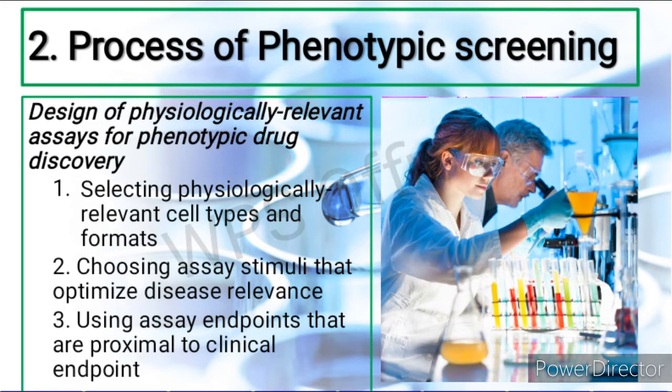Moving on to the process of phenotypic screening: phenotypic discovery design consists of three broad areas. First, physiologically relevant cell types, formats, or models are to be selected. Choosing between in vitro and in vivo models depends on the relevance and ability of the simulated model to be translated to the human physiology level. In vitro models are usually employed since human cell cultures like HeLa cells and stem cells correlate to human tissues more accurately.